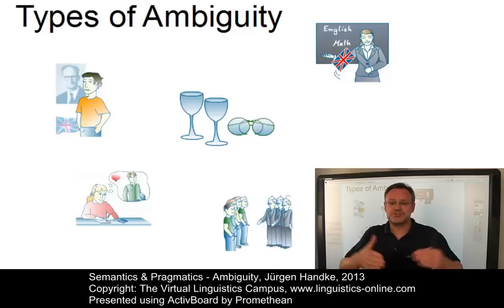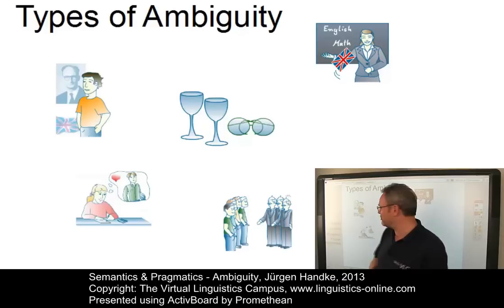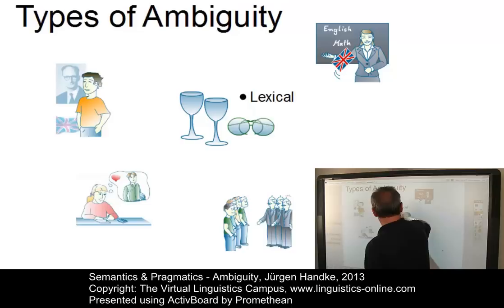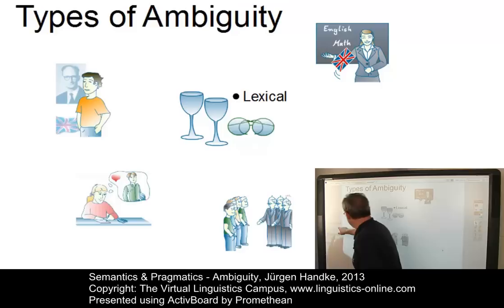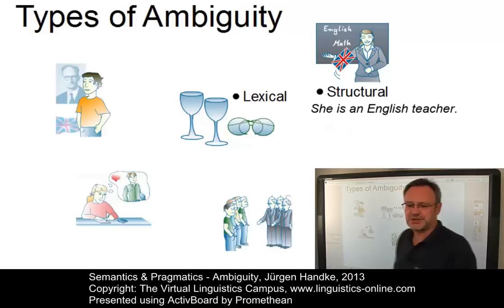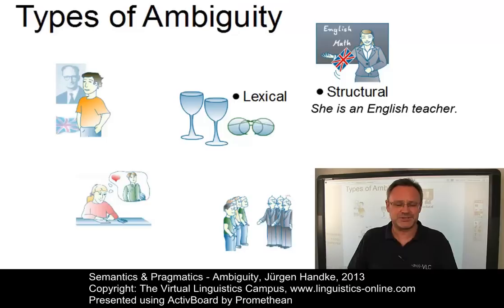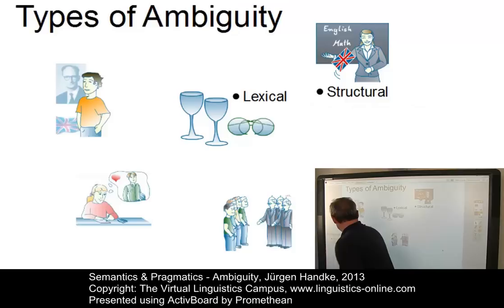Natural language utterances may involve some or several of the following types of ambiguity. For example, lexical ambiguity — the word 'glasses' may denote two different things: the cutlery or the vision tool. Or take the case of structural ambiguity, as in 'she is an English teacher.' Now, is she a teacher who teaches English, or is she a teacher who comes from England?